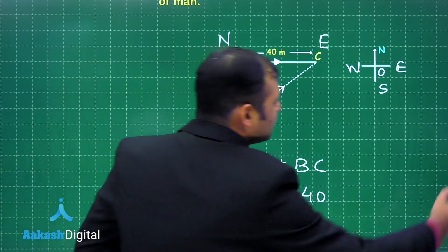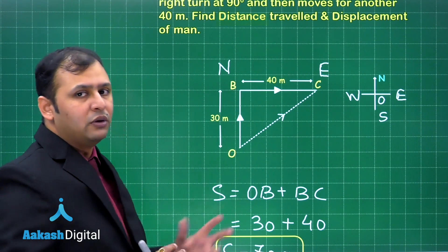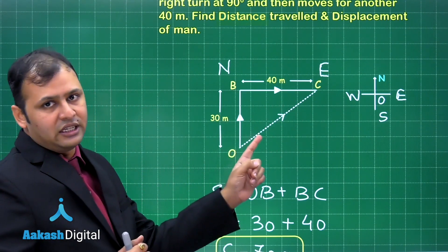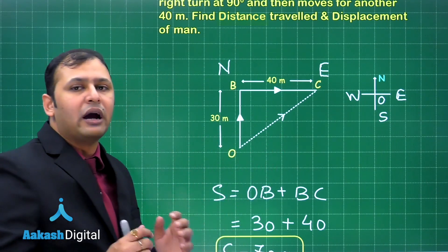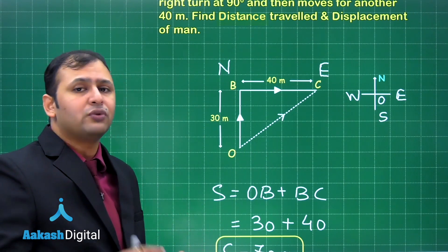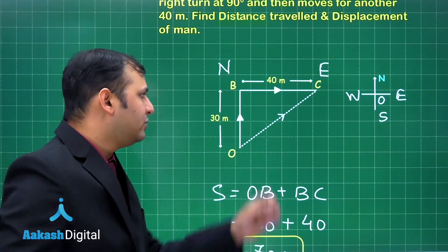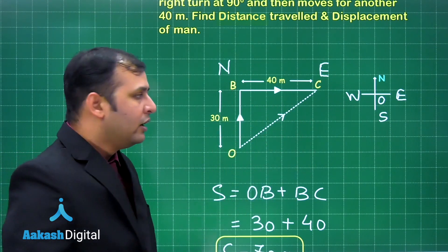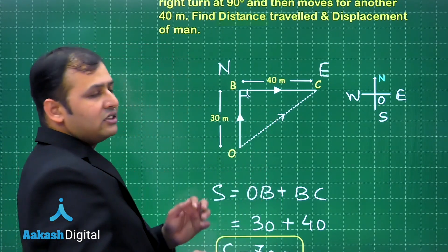Now let's find the displacement. In order to find the magnitude of the displacement, you draw a straight line between O and C. That straight line's length gives you the magnitude of displacement. Always remember: to find the magnitude of displacement, draw a straight line between the final position and the initial position and calculate its length.